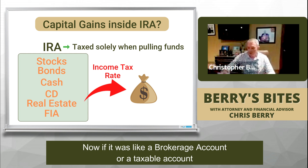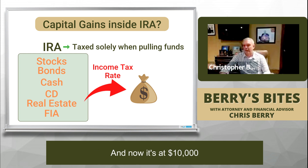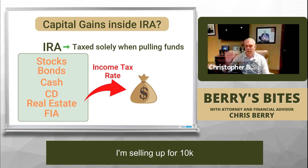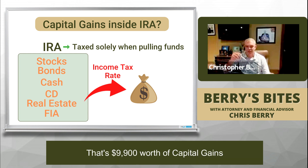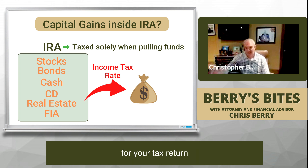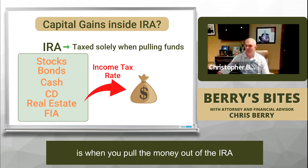Now, if it was a brokerage account or a taxable account, then that would be different. Let's say you bought Facebook for a hundred dollars and now it's at $10,000 and you sold it in a taxable account — you'd have to worry about capital gains. You'd have to know you bought it for a hundred and you're selling it for $10,000, so that's $9,900 worth of capital gains, and that's going to show up on your tax return. But if you do it inside of the IRA, there's no tax consequence. The only time you're actually taxed is when you pull the money out of the IRA.